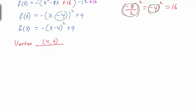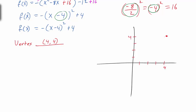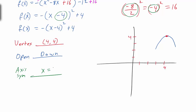To plot the vertex, we go over 4 and up 4. Our 'a' value is -1, so the parabola opens down. Because it opens down and the vertex is above the x-axis, it will cross the x-axis at two points. The axis of symmetry is x = 4.